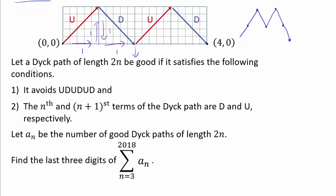Let's see what the question is. Let a Dyck path of length 2n be 'good' if it satisfies the following conditions: first, it avoids UDUDUD — it does not contain UDUDUD as a subsequence — and the nth and (n+1)th terms of the Dyck path are D and U respectively. So we know we're going to have this DU right at the center. We want to let a_n be the number of good Dyck paths of length 2n, and find the last three digits when we add up all the a_n's from n equals 3 to 2018 inclusive.